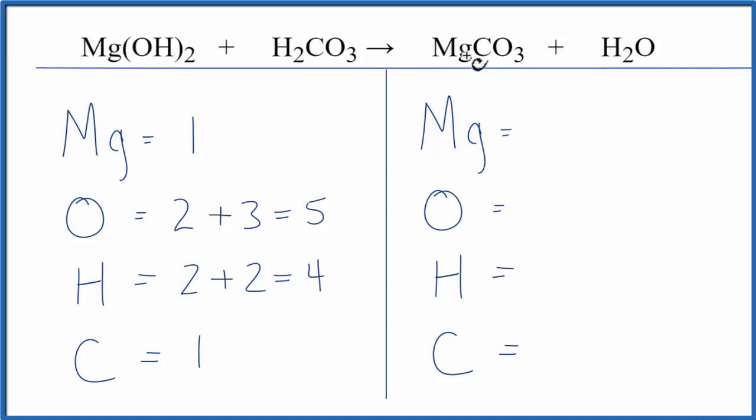On the product side we have 1 Mg, oxygens 3 plus this one right here, 4 of those. Hydrogens we have 2 and 1 carbon.